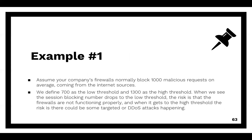Let's try to explain this with an example. In example number one, assume that in our company we have firewalls and we see normally 1,000 malicious requests being blocked on average coming from internet sources. We define 700 as the low threshold and 1,300 as the high threshold. When the sessions blocking number drops to the low threshold, that is a risk indicator — a possibility that the firewall is not functioning properly, so it's allowing all the traffic and not blocking anything.